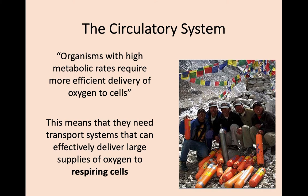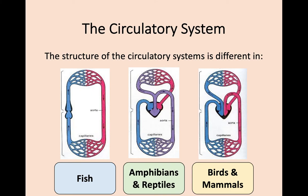Think of it this way: if you're working really hard you breathe heavier, taking in more oxygen because you're respiring more and your muscles need that oxygen to produce ATP. You can already see the differences between the three different circulatory systems — fish looks quite simple, amphibians and reptiles looks more complicated, and birds and mammals has the four chambers we've looked at before, with oxygenated and deoxygenated blood in opposite directions.